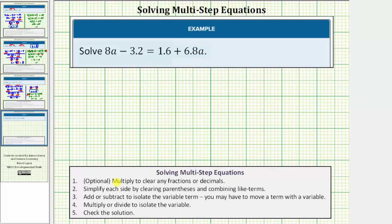Looking at the notes below, step one is optional, which is to multiply to clear any fractions or decimals. Because our equation does have decimals, let's begin by clearing the decimals from the equation. Notice how all the decimals have one decimal place, which means we can clear the decimals by multiplying both sides of the equation by 10. Let's go ahead and do this.